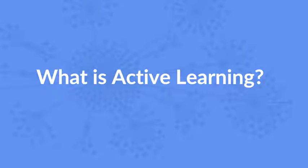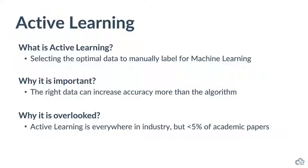So what is active learning? It's selecting the optimal data to manually label for machine learning. Why is it important? Selecting the right data can increase accuracy more than the algorithm in a lot of use cases. I've certainly seen cases in industry where you might spend many months tuning your algorithms for a couple of percent increase in accuracy, but just a couple of hours of new data labeling for your training data will get even greater increases — maybe 10 to 20%. But it's often overlooked. Active learning is used pretty much everywhere in industry, but it's in less than 5% of academic papers.